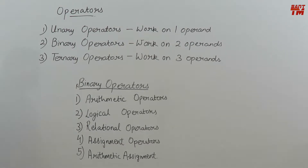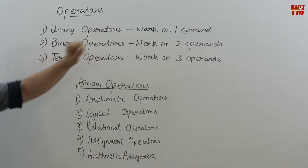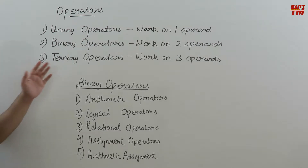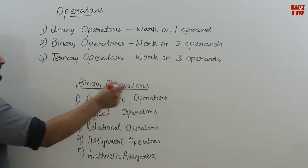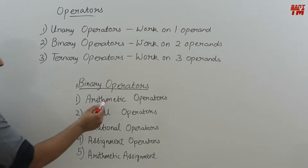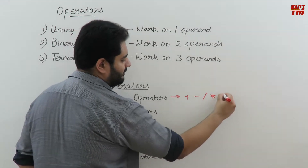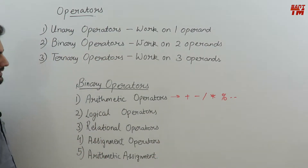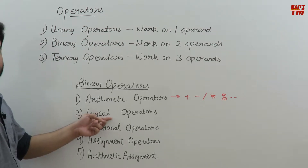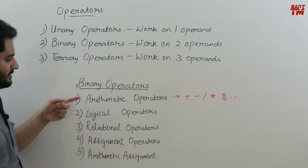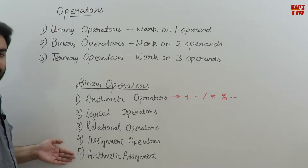In the category of operators there are three types: unary operator, binary operator, and ternary operator. Unary works on one operand, binary works on two operands, and ternary works on three operands. Within binary operators there are five types: arithmetic operators, used for mathematical calculations like plus, minus, divide, multiply, and remainder; logical operators, which carry out logical operations; relational operators, which depict relations; assignment operators, which assign a value; and arithmetic assignment operators, which are a mixture of arithmetic and assignment operators.